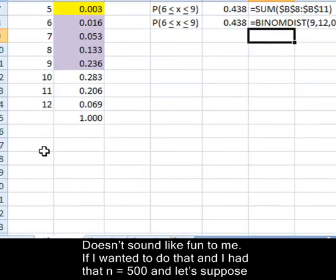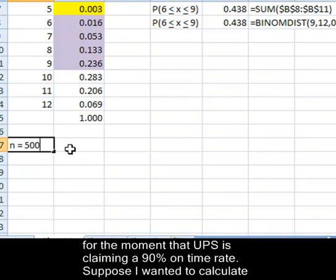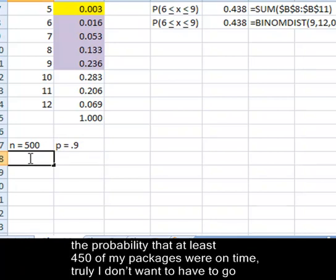If I wanted to do that, and I had that n was equal to 500, and let's suppose for the moment that UPS is claiming a 90% on time rate.